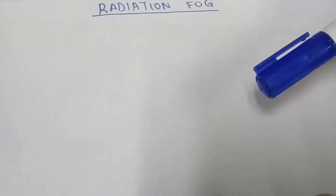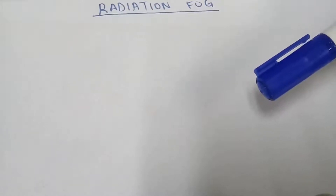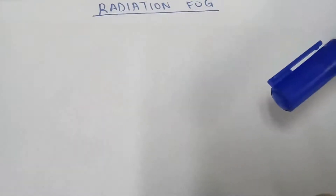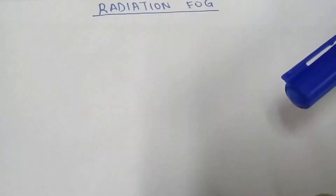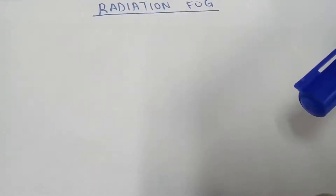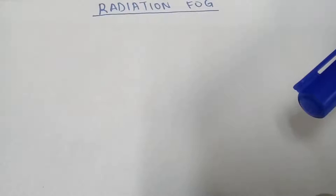I can also say it's a kind of mist — the thing that you see, it's a mist. These are the water droplets that you experience during the morning. They appear just before the Sun. You can see them just before sunrise because when the Sun rises they are going to evaporate.